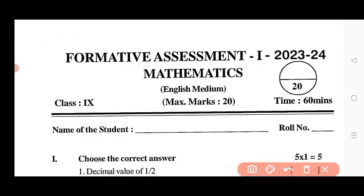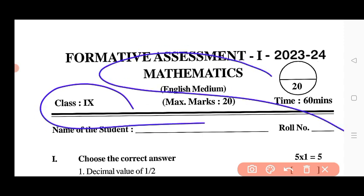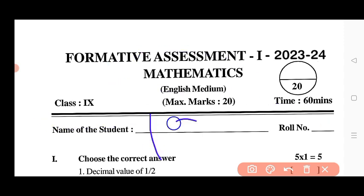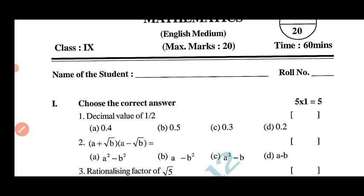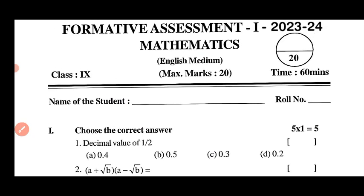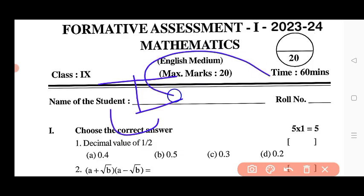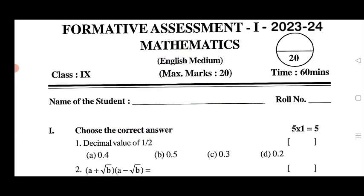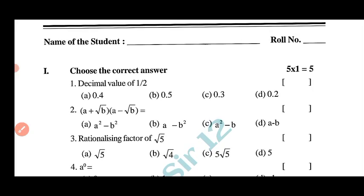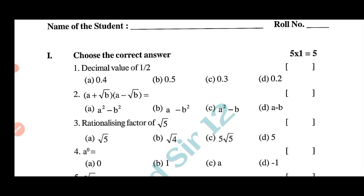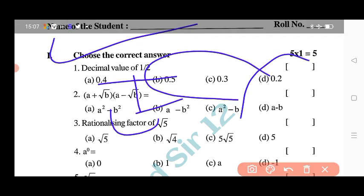AP Board Formative Assessment 1st 2023-24, Class 9, Subject Mathematics. 100% real question paper — in this video will be complete solution and PDF. Join Telegram Channel link within description. Maximum marks: 20, time: 60 minutes. Let's get started with the real question paper and complete solution PDF. First: choose the correct answer — 5 marks.